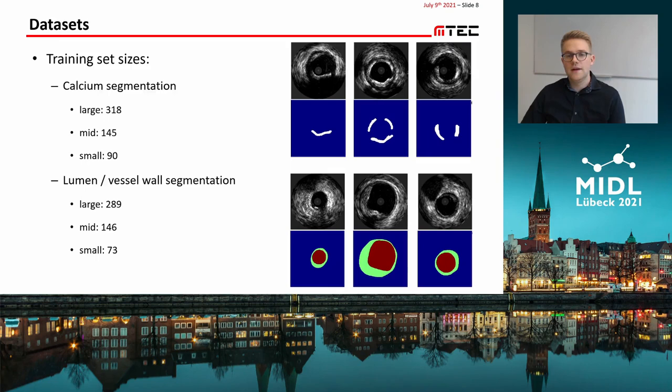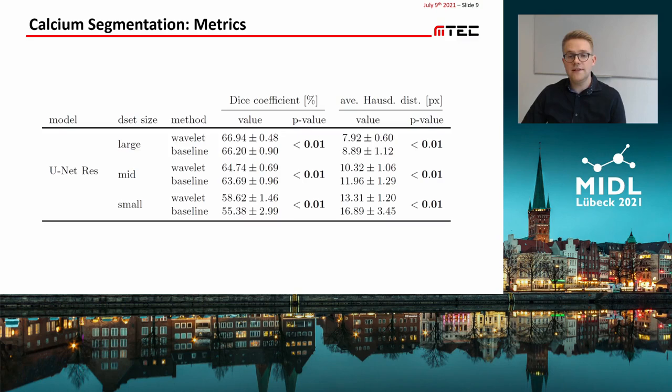We employed two intravascular ultrasound datasets: one for calcium segmentation and another one for lumen and vessel wall segmentation. We trained both networks with three different training set sizes and compared the results by means of DICE coefficient and average Hausdorff distance.